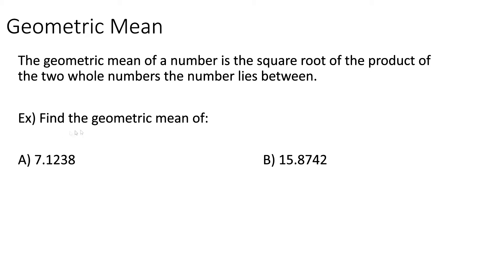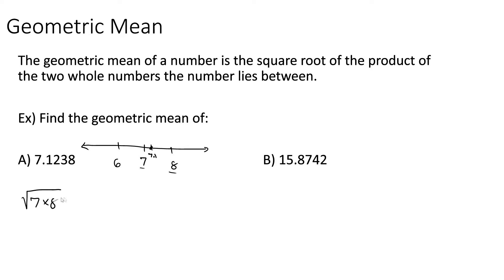An example: find the geometric mean of 7.1238. If we draw out a number line, 7.1 falls between 7 and 8. So the geometric mean of this number would be the square root of 7 times 8, or the square root of 56, which happens to be 7.4833.